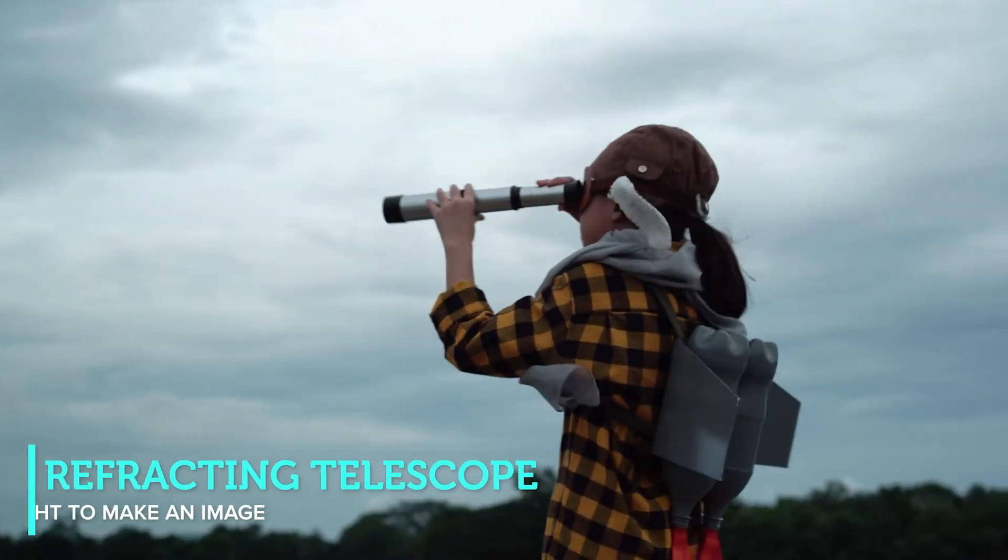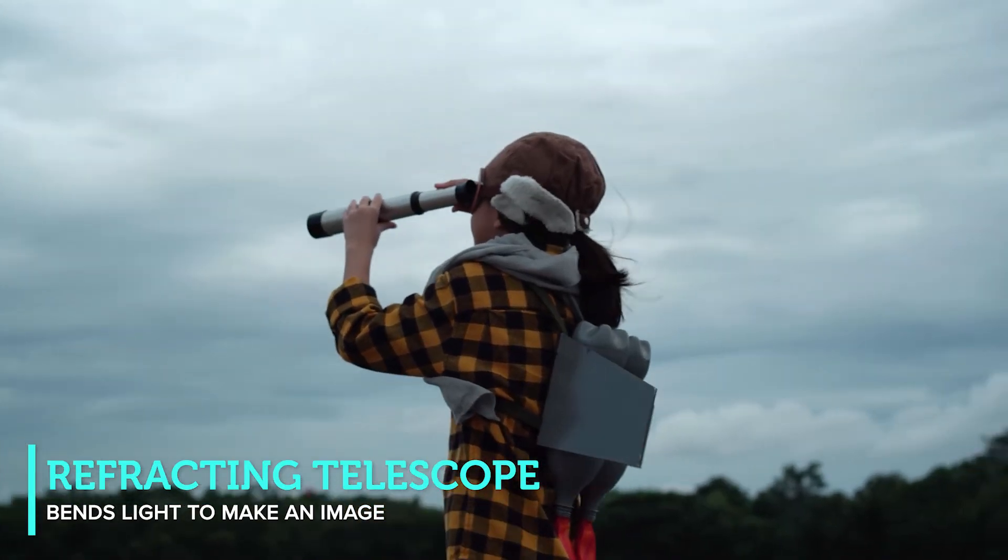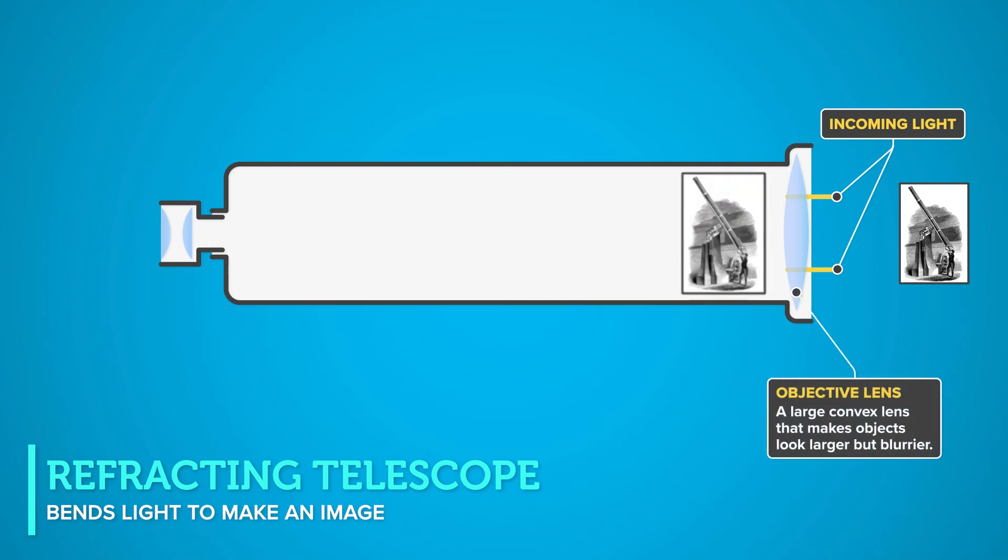A refracting telescope refracts or bends light to make an image. The yellow lines represent incoming light. A large convex lens, called the objective lens, makes objects look larger but blurrier than they really are. This lens, which curves or bulges outward, collects and focuses the light, bending it to form an upside-down image.